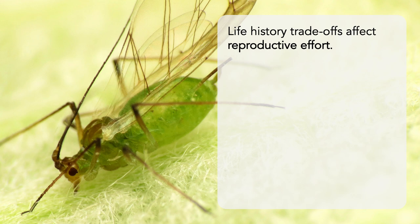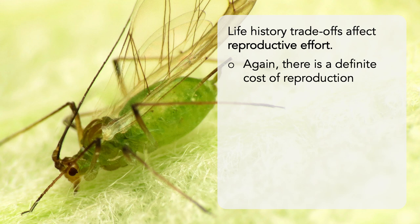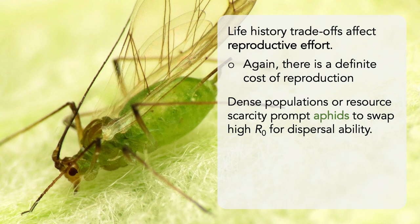Life history trade-offs affect reproductive effort, defined as the proportion of nutrients and energy allocated for reproduction specifically. Again, there is a definite cost of reproduction. For example, high population densities or resource scarcity prompt some aphids to swap their high net reproductive rates for better dispersal ability. Instead of allocating all of their resources towards reproduction, they build dense flight muscles and develop wings. This can have enormous fitness consequences at the level of the individual, since most aphids reproduce asexually for extended periods, so selection can act at the level of a clonal colony instead of an individual.